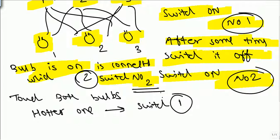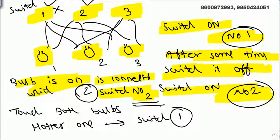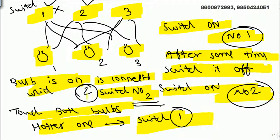And the remaining cooler bulb has to be connected by switch number three. So in summary: we had three bulbs operated by three switches. We switched on the first one, waited, switched it off, then switched on the second one and went inside. The glowing bulb is switch two, the hotter remaining bulb is switch one, and the cooler remaining bulb is switch three.